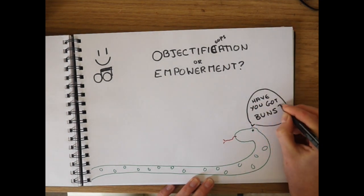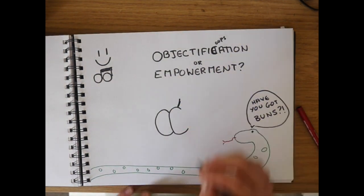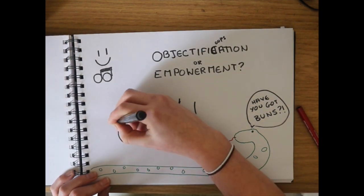Take Anaconda by Nicki Minaj for example. The music video consists of half-naked women booty shaking and cutting phallic shaped food objects in half. Many people feel that this sort of empowerment can contribute to rape culture.